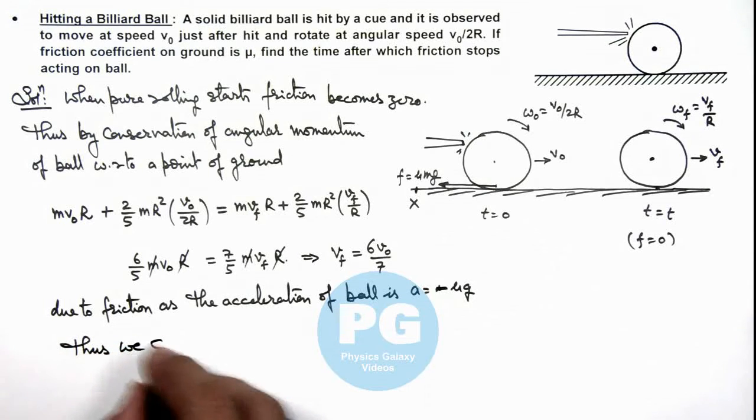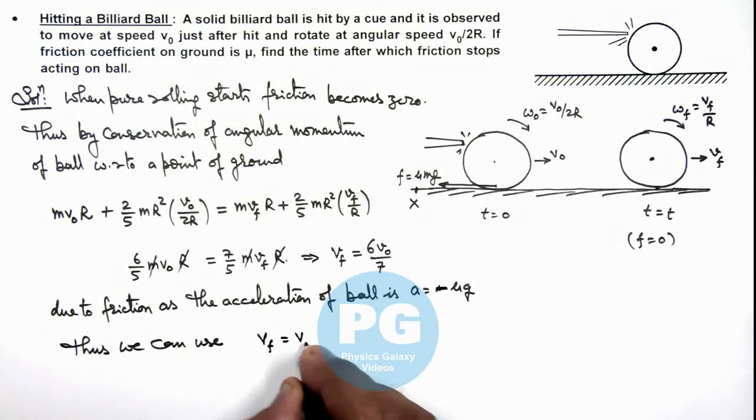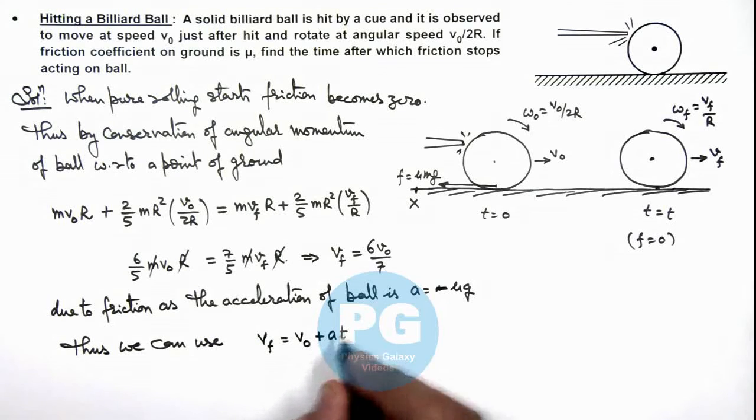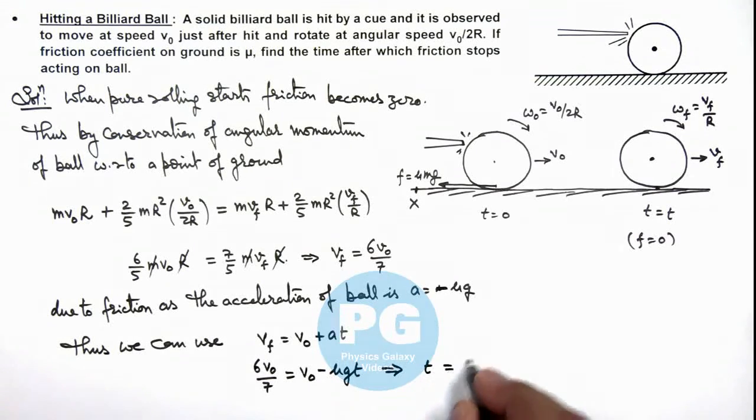Thus we can use the speed equation vf = v₀ + at, where a is the acceleration, or we can write v₀ - μgt. So the final speed is 6v₀/7, which should be equal to v₀ - μgt. Simplifying this we get the value of time which is v₀/7μg. That is the result of this problem.